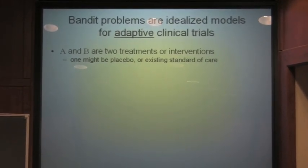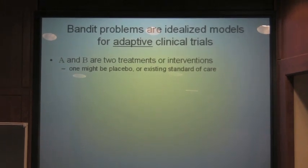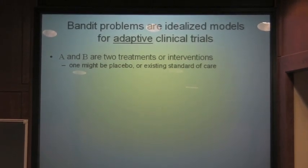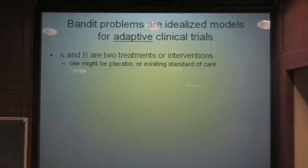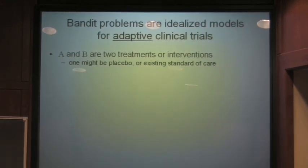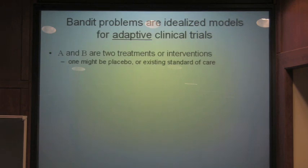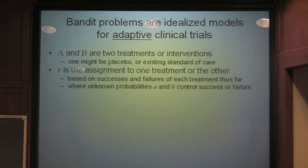In a clinical trial, we have two possible treatments or interventions. Or we might have one treatment and a placebo, or we might have one new treatment and an existing standard of care. But for my purposes here, there are going to be two possible things that we can do with a patient. Two possible treatments that we can assign a patient to.